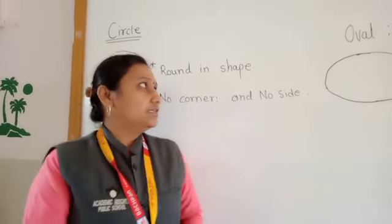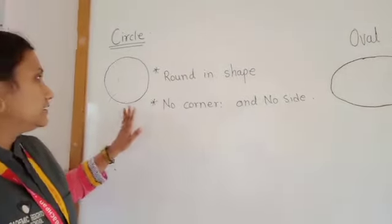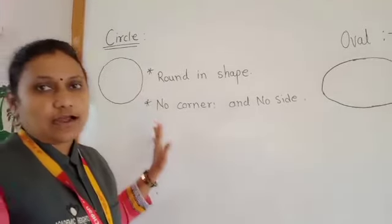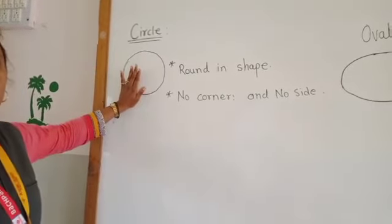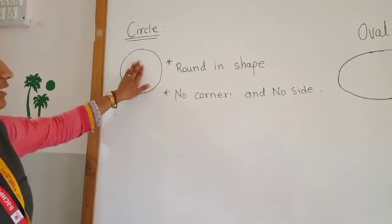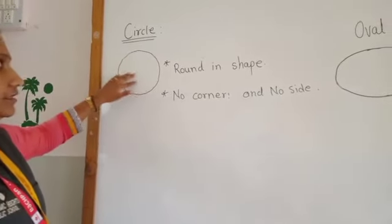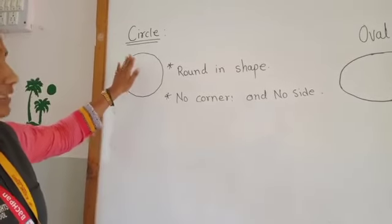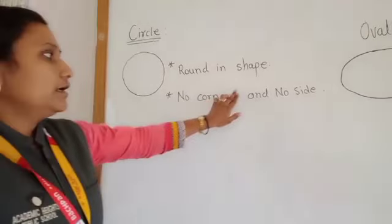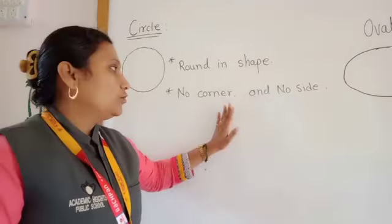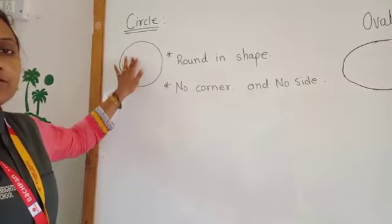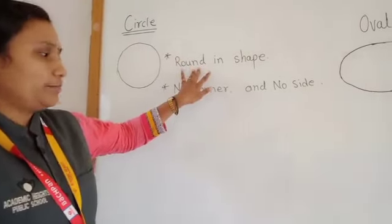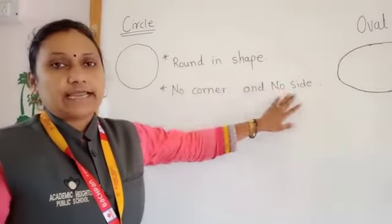Now, let us see circle. This is a circle. Circle is round in shape and circle has no corner and no side. The circle is made of a curved line and it does not have corners and sides. It is round in shape and does not have sides and corners.